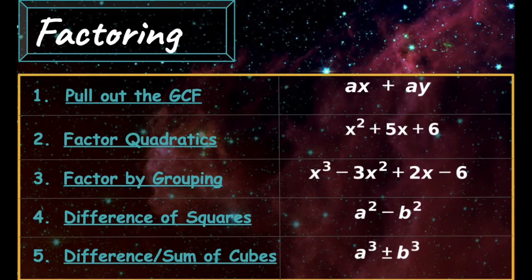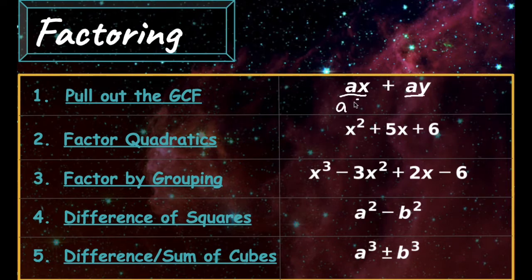Here we have the 5 ways that we can factor a polynomial. The first is to pull out the greatest common factor. Here we have an example ax plus ay. We can see that both terms have a common factor of a, so if we pull the a out, we'll be left with a times x plus y.